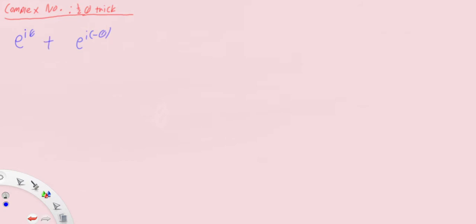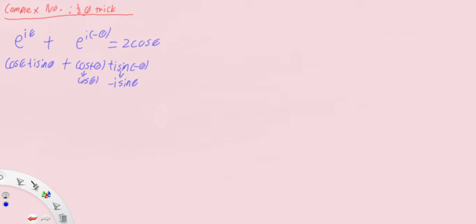The first property: e^(iθ) + e^(-iθ) gives us 2cosθ. This is easily proven through the polar form. e^(iθ) is cosθ + i sinθ. e^(-iθ) is cos(-θ) = cosθ, plus i sin(-θ) = -i sinθ. Adding them together, the i sinθ and -i sinθ cancel to zero, and cosθ + cosθ gives 2cosθ. That's the first property.